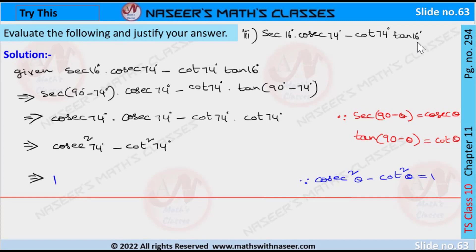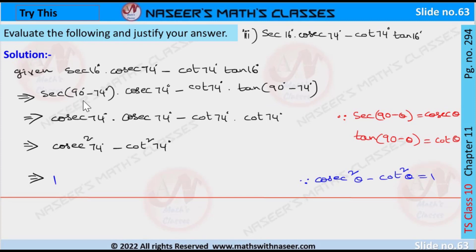For the third problem, we write 16 degrees as 90 minus 74 degrees, and tan 16 degrees is written as tan(90° − 74°).